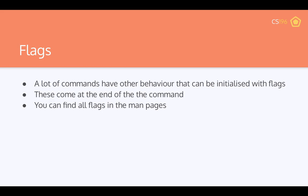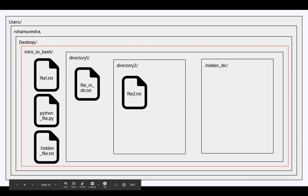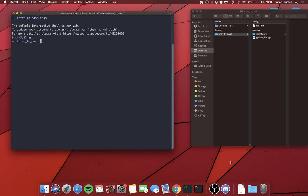Another important concept in Bash is flags. A lot of commands have additional behaviors that are initialized with flags. Flags come after the command, indicated by a hyphen and a short letter or string, and you can find all available flags in the man pages. For our purposes, think of this system: we have my computer, the folder we're working with, and what's inside that folder — this is our 'Intro to Bash' folder.